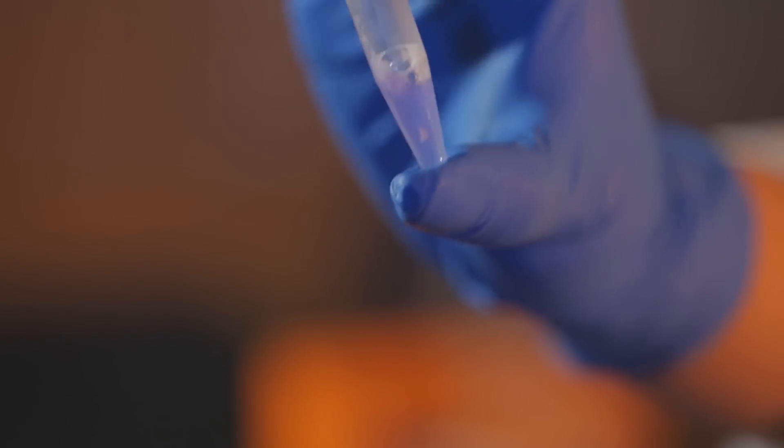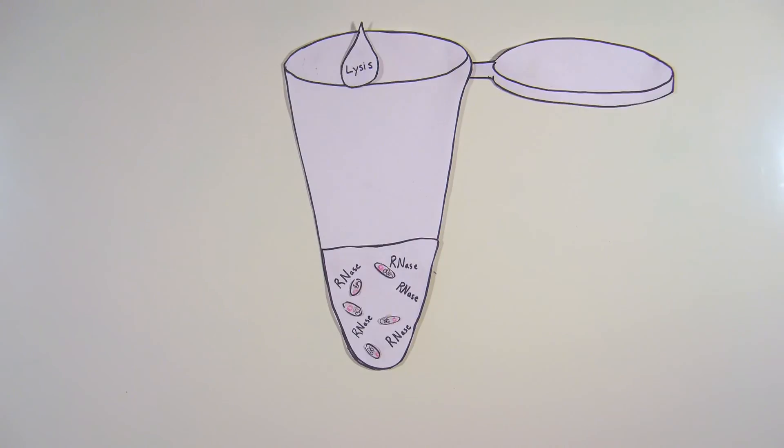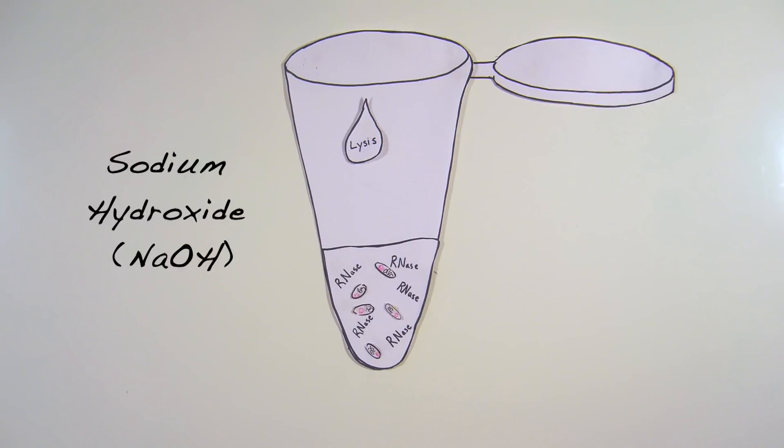If you are using a Qiagen kit, the cell suspension will turn blue after the addition of the lysis buffer. Mix the solution until you have a uniformly colored suspension. The lysis buffer contains a mixture of the base, sodium hydroxide, and the detergent, sodium dodecyl sulfate, or SDS.